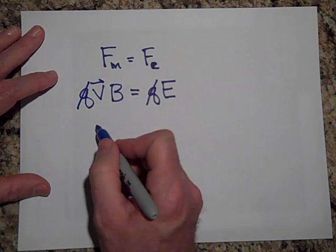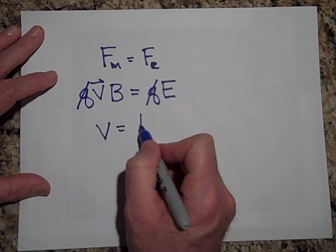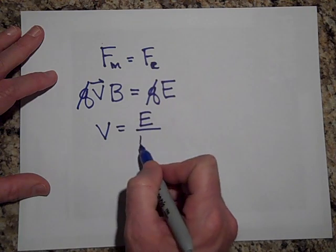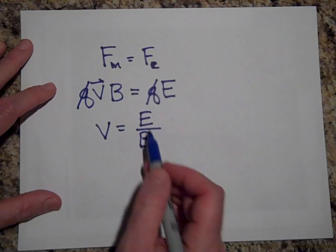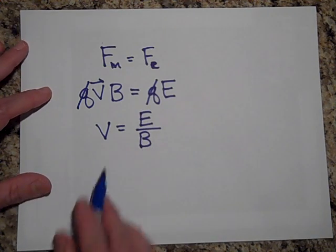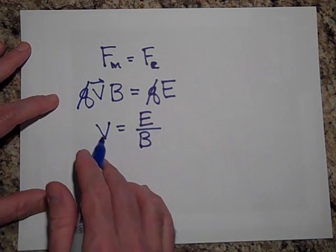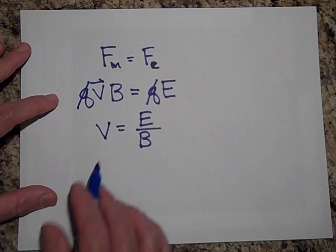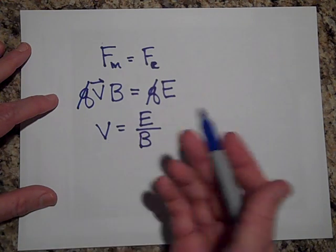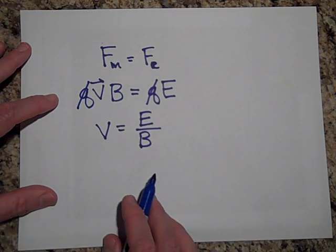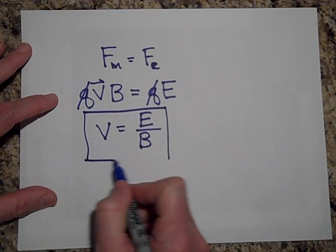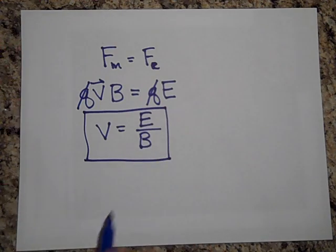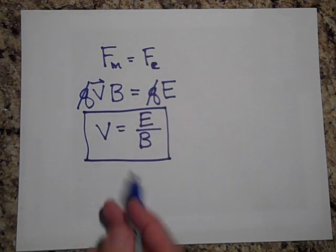The velocity that's needed is E over B. Apparently if I divide an electric field by a magnetic field, I get a velocity. That's how an object can go through unhindered. My suggestion: don't memorize E over B - it's a very simple derivation.